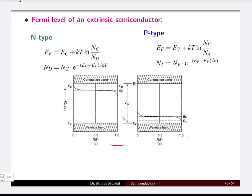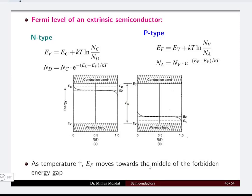If we draw the graph for these equations, we find that Eg represents the gap between the valence band and the conduction band. The Fermi energy level Ef shifts towards the middle of the forbidden energy gap as temperature increases. So with increasing temperature, Ef moves toward the center of the forbidden energy gap between the conduction band and the valence band.